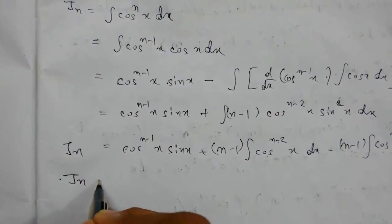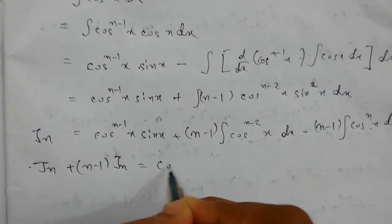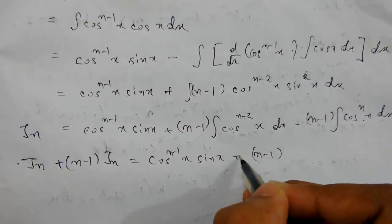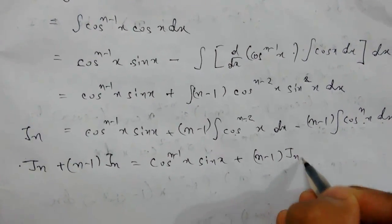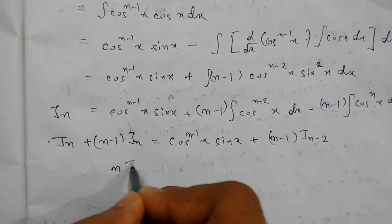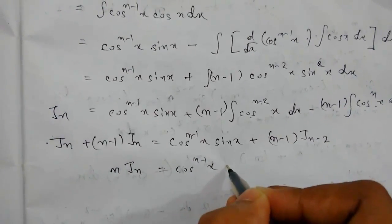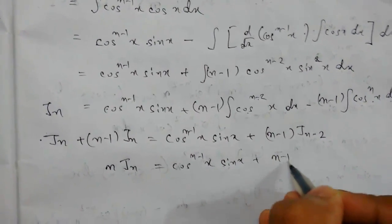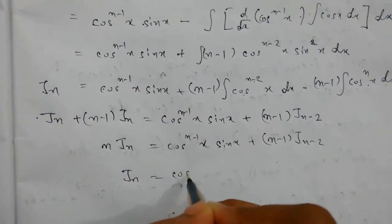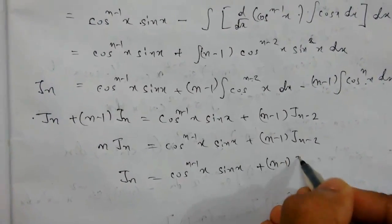So it will be Jn plus (n-1)·Jn equals cos^(n-1)(x)·sin(x) plus (n-1)·J(n-2). Therefore Jn equals cos^(n-1)(x)·sin(x) divided by n, plus (n-1)/n times J(n-2). This is our reduction formula.